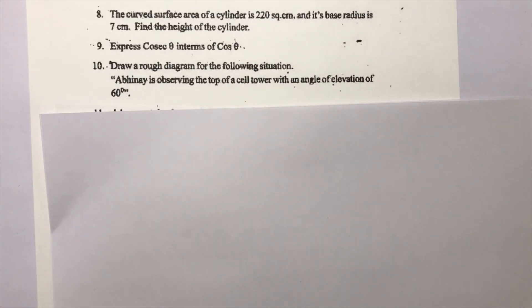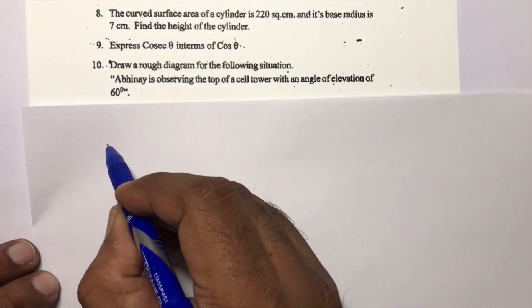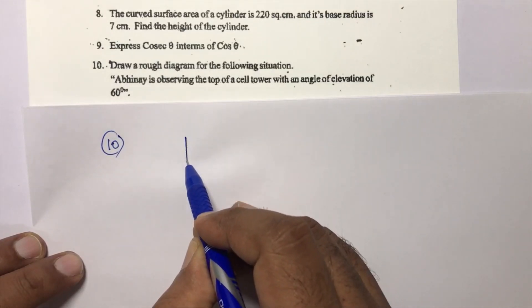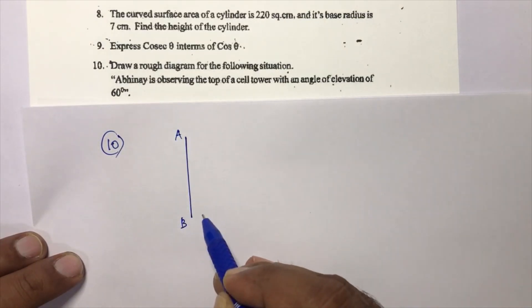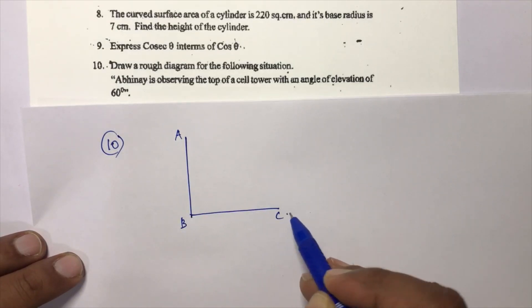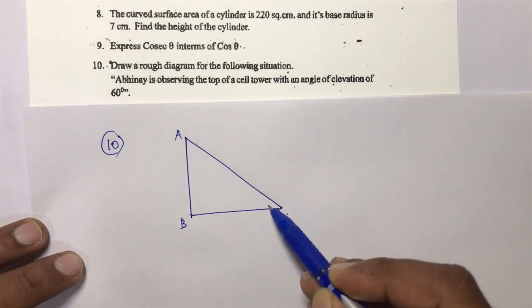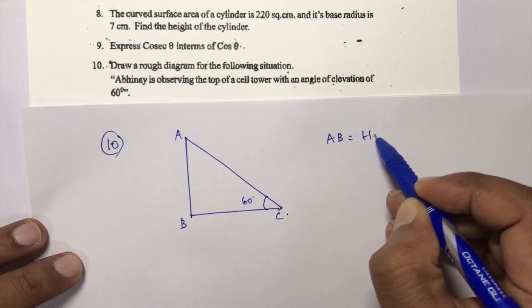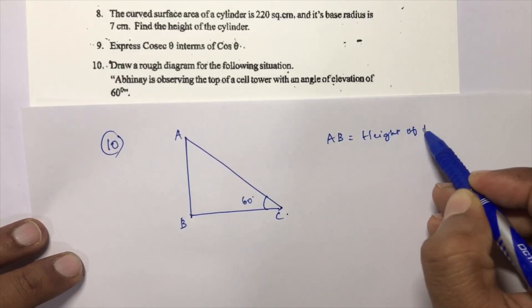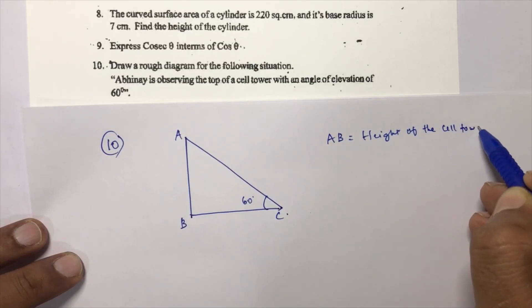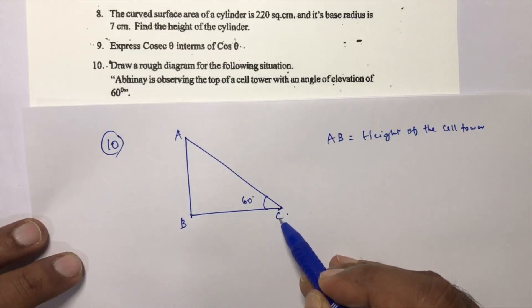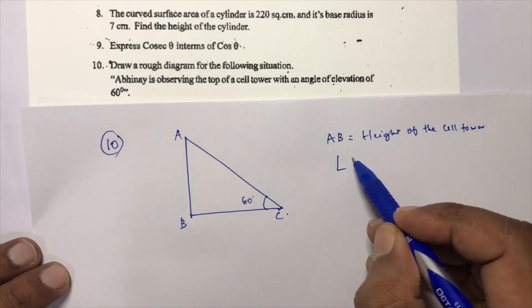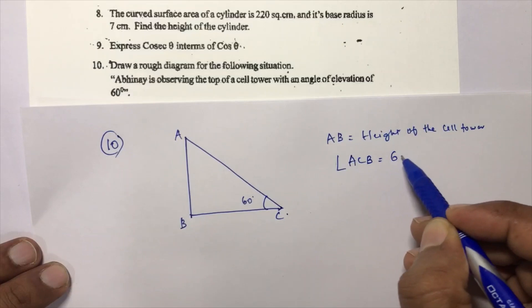The tenth question: draw a rough diagram for the following situation — Abhinah is observing the top of a cell tower with an angle of elevation of 60°. In the diagram, AB is the height of the cell tower, C is the position of Abhinah, and the angle of elevation ACB is 60°.